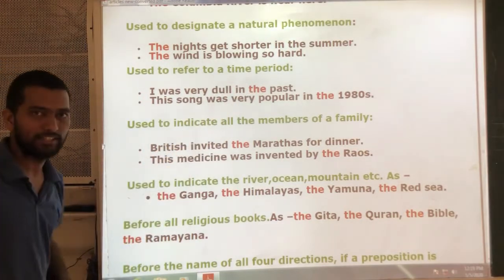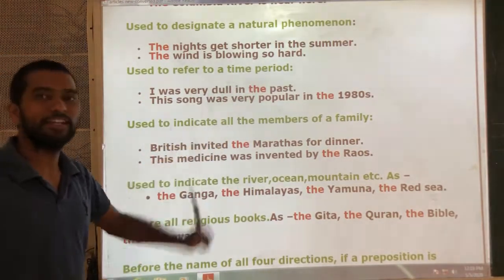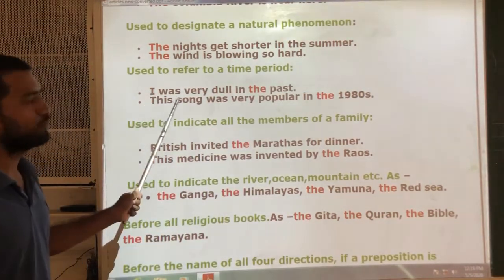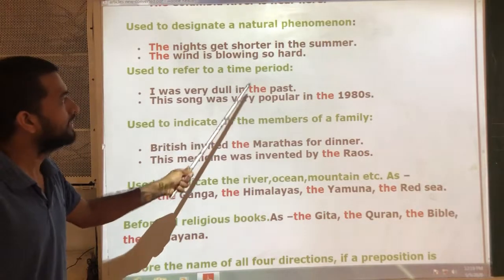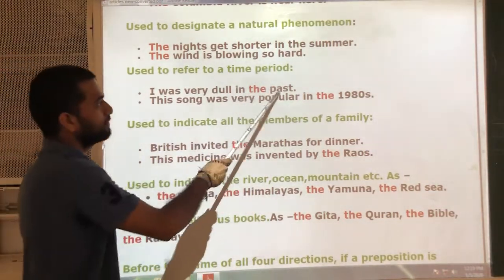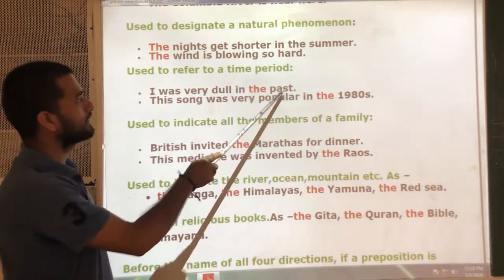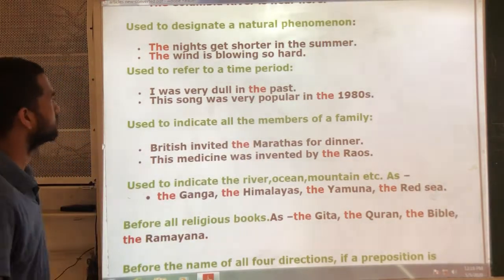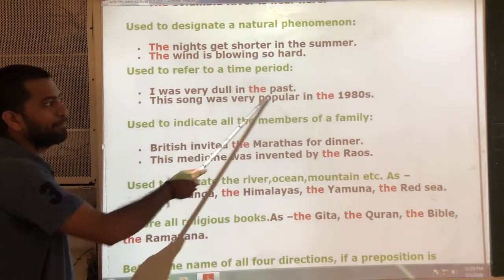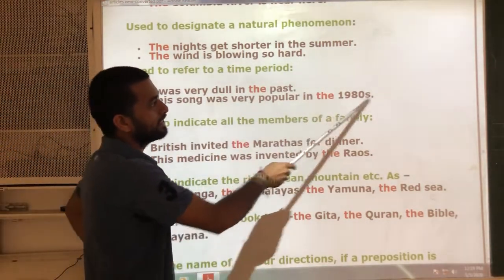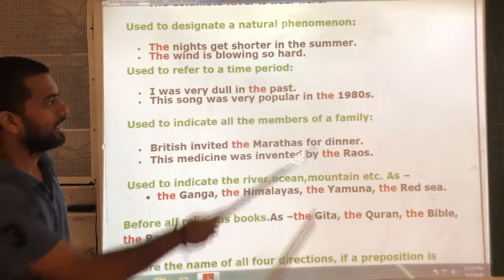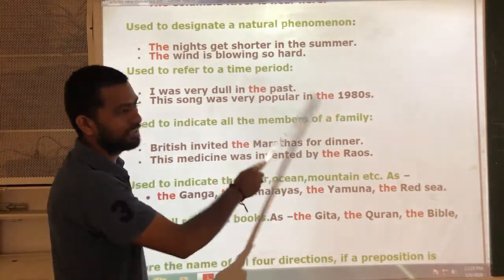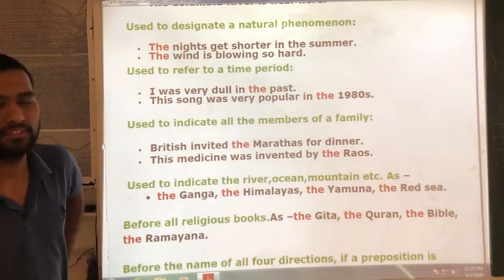Next rule: use 'the' to refer to a time period. When we refer to a specific time period, 'the' is used. For example: 'I was very dull in the past' — 'past' is a particular time period, so 'the' is used. Another example: 'This song was very popular in the 1980s' — 1980s is a particular time period, so 'the' is used.